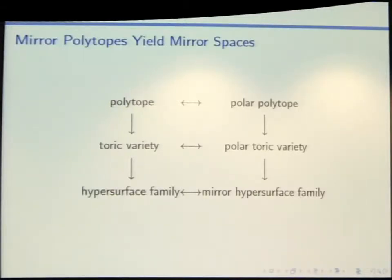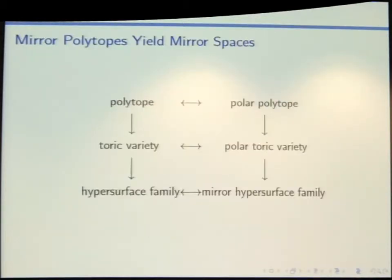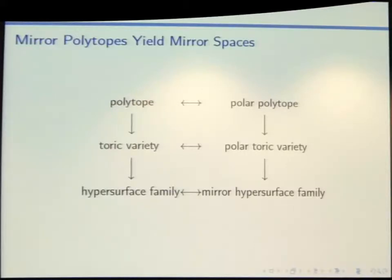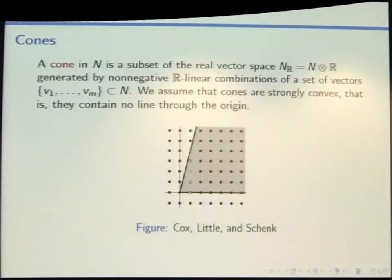Why would you want to classify them? Once upon a time the hope was that perhaps with this giant list of Calabi-Yau manifolds — I'm going to tell you how to get those from reflexive polytopes — you could actually find the Calabi-Yau that would be the extra dimensions of our universe. But that proved to be a not terribly realistic ambition. So let's say how this is going to work: we're going to start with a pair of polytopes and get from them a pair of toric varieties.